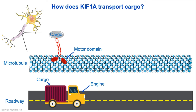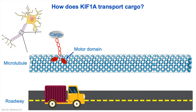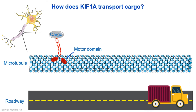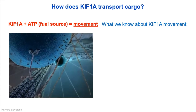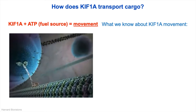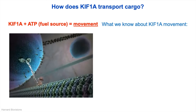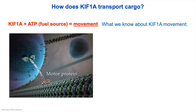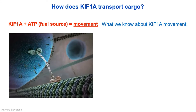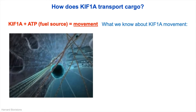In the context of our truck, we need gasoline so we can fill up the gas tank and off the truck can go to deliver cargo where it is needed. The same is true for KIF-1A, except instead of gasoline, it uses a cellular fuel source known as ATP. And when KIF-1A is in the presence of ATP, what is achieved is movement, like we can observe in this artist's rendition of a KIF protein carrying cargo along the microtubule roadways on a mission to deliver this cargo to where it is needed within the cell.